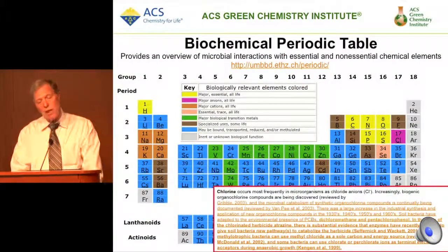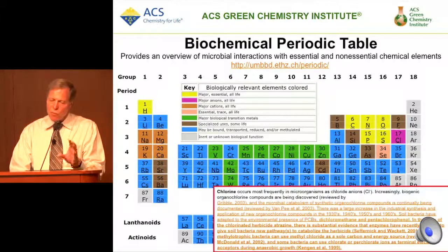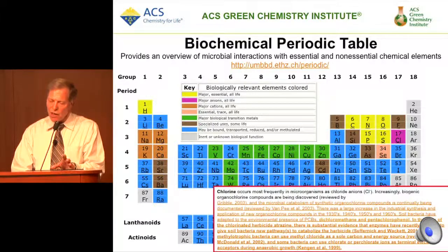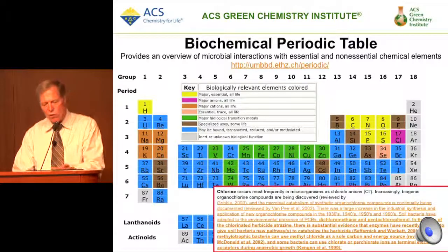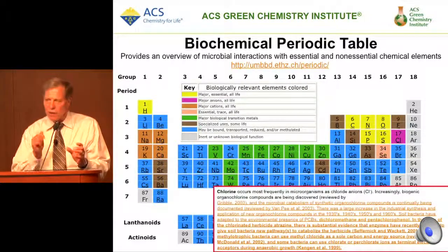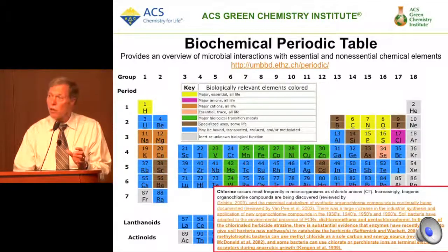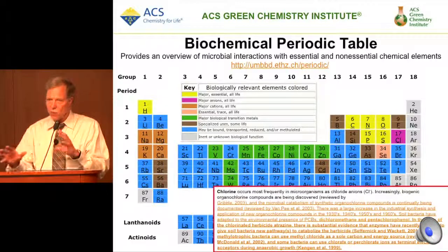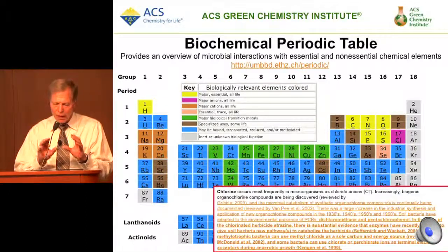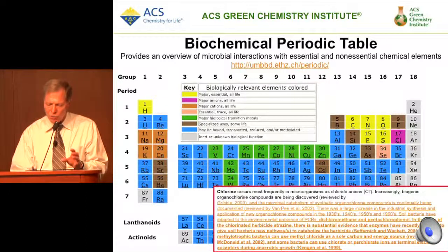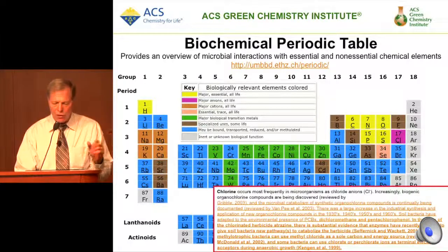This is a kind of cool table — it's a biochemical periodic table. It tells you about microbial interactions with essential and non-essential chemical elements. Each box is a link — you tap on that link and call up a box such as the one for chlorine, and you can read about that particular atom in relationship to biodegradation and microorganisms.